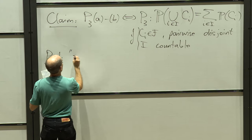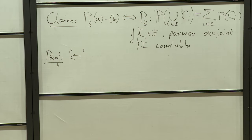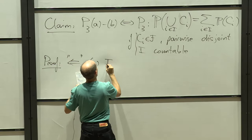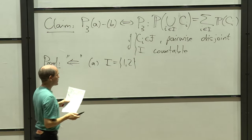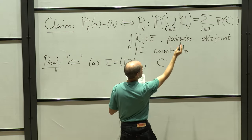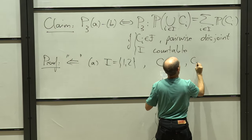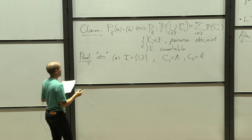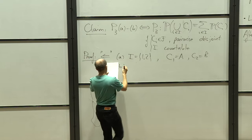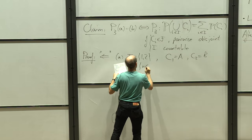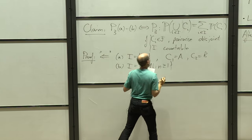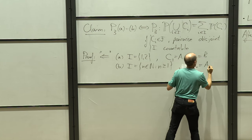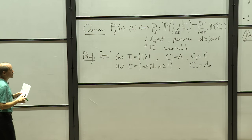It's an equivalence so we prove two directions. The easy direction: given the general statement on the right where I can be any countable index set, to prove P3a it suffices to take I as an index set with two elements — say one and two — and define C_1 and C_2 to be A and B respectively. Then P3 on the right is exactly P3a. For the countably infinite case, take I to be the natural numbers and set C_n equal to A_n — again the statements are the same.